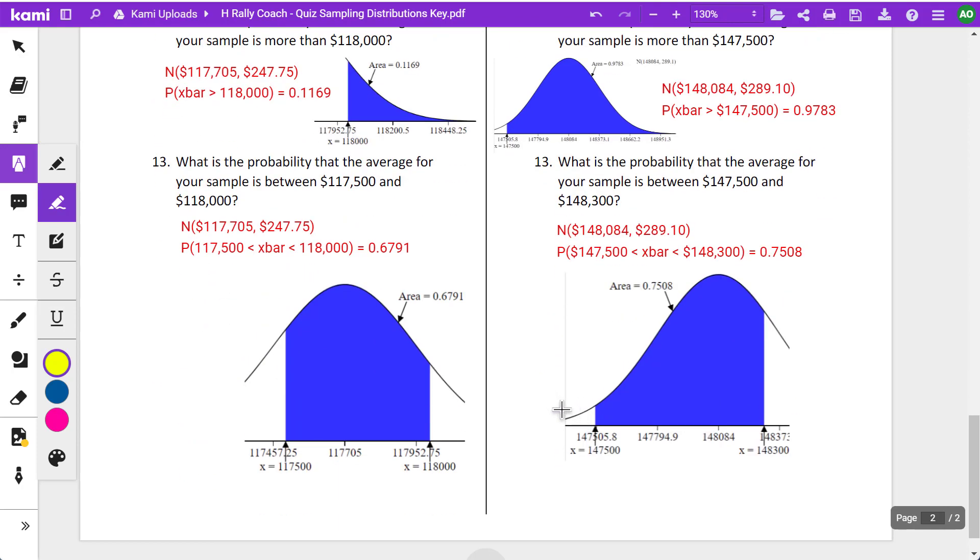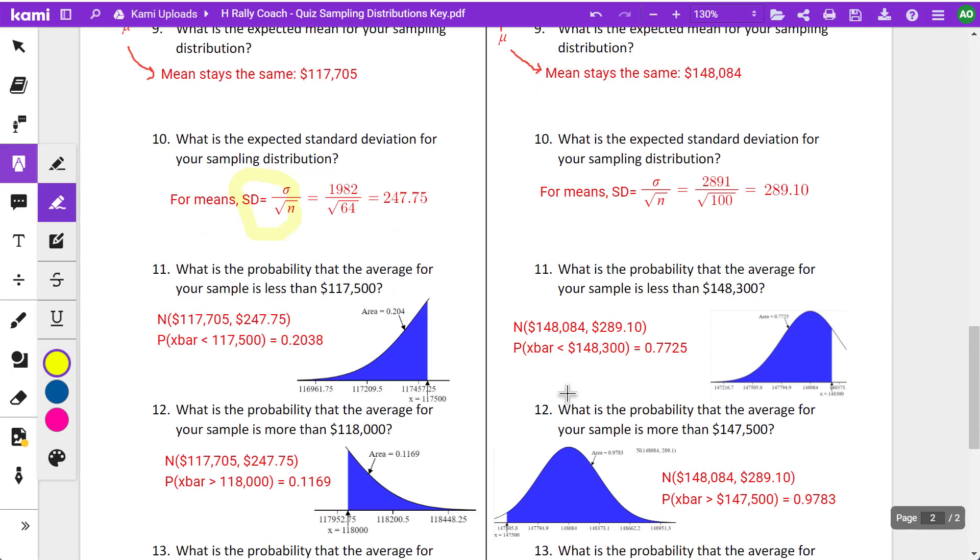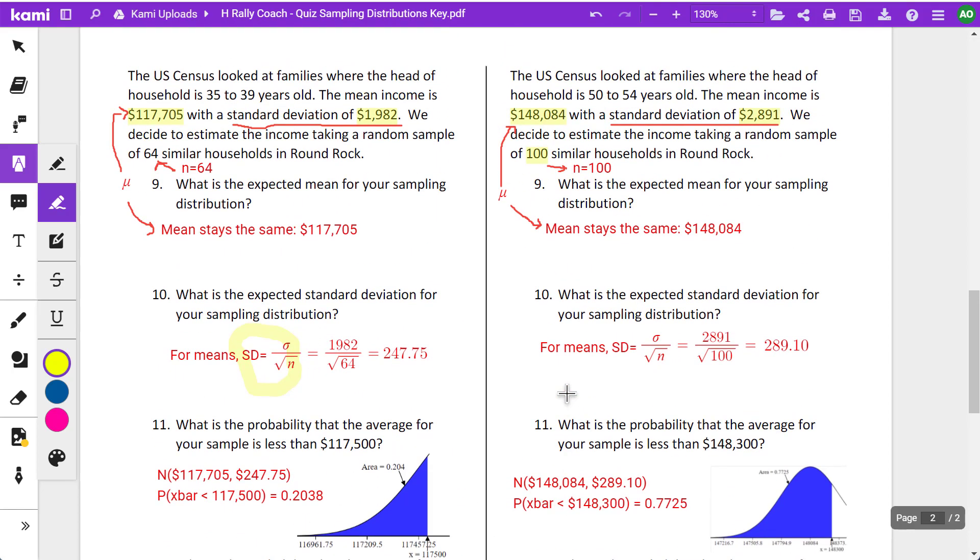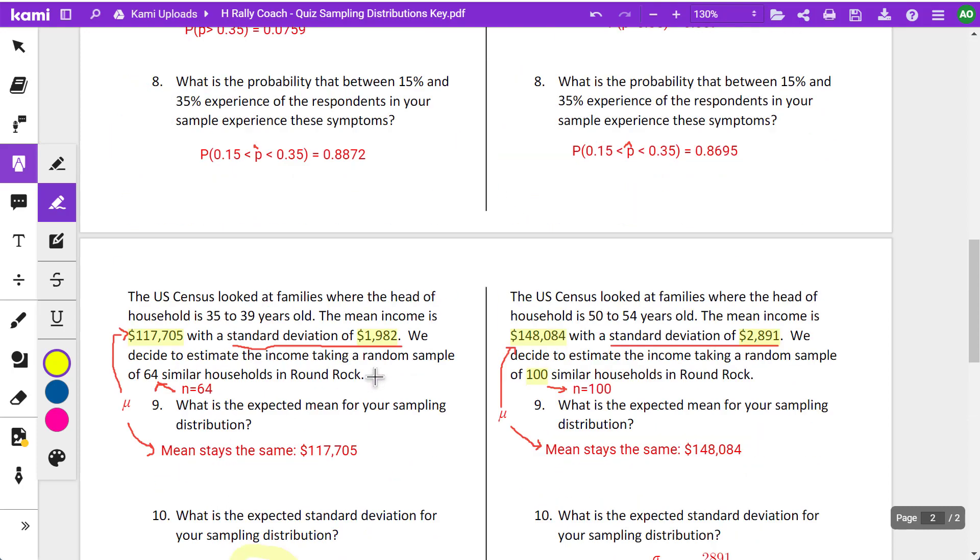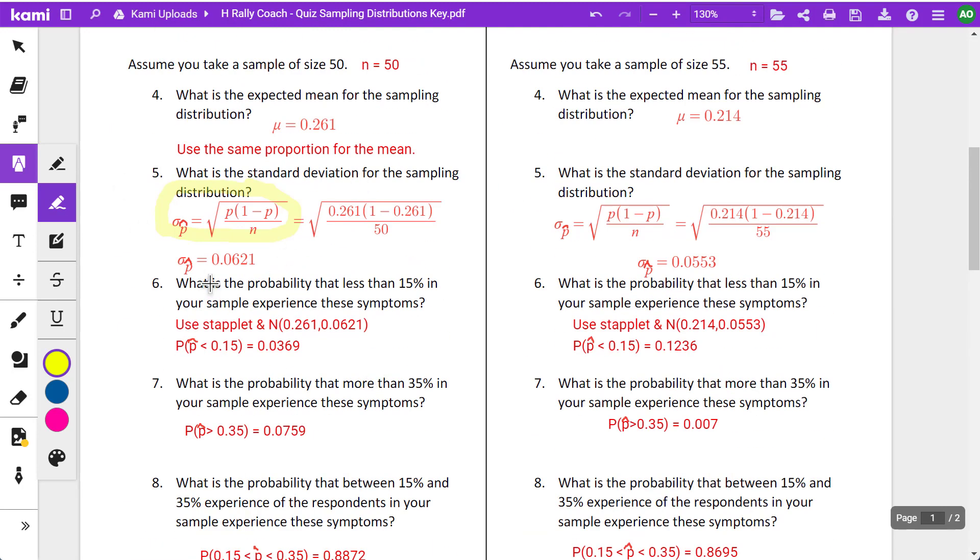So again, the main thing on these is you're basically doing the normal models like you did in the last unit, but we're having to adjust our standard deviation for both means and for proportions when we calculate probabilities for samples.